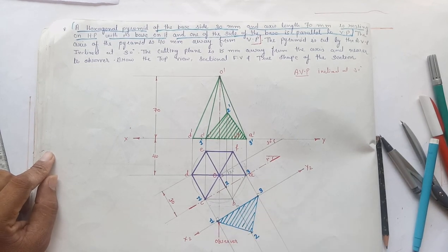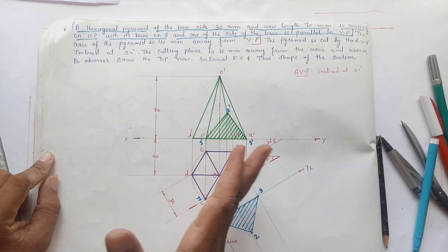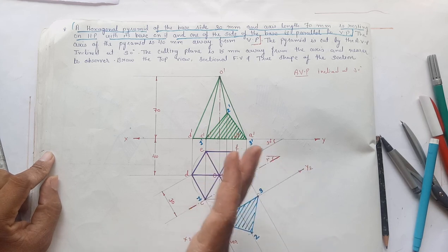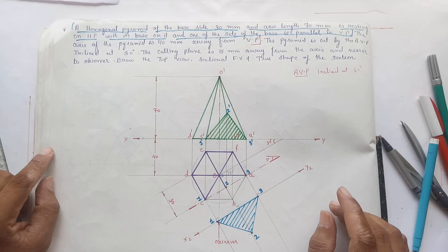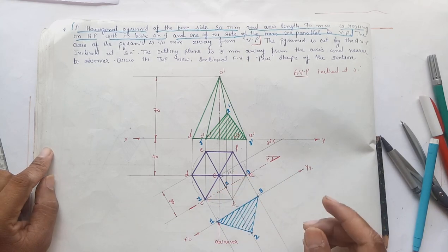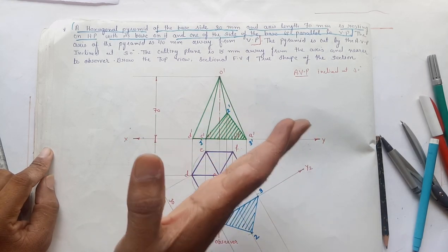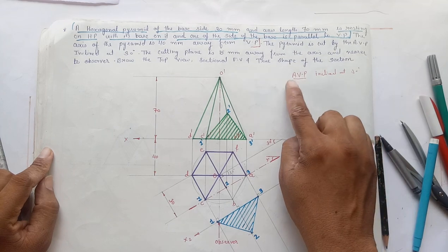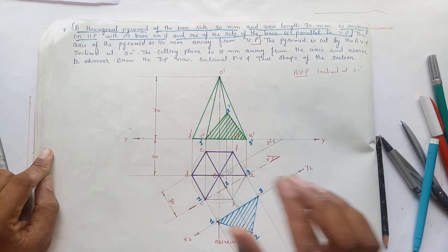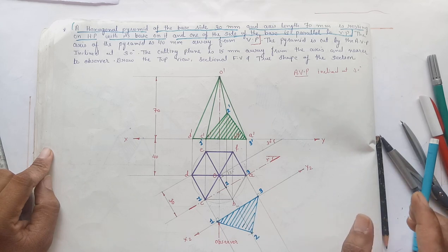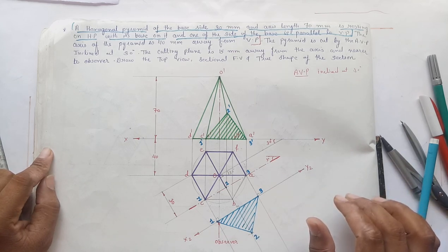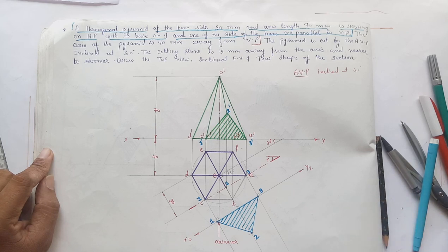This will be the true shape of the section. Draw hatching lines in the true shape also, inclined at an angle of 45 degrees to the X2Y2 line. In this example we showed the cutting plane in the plan because it was an AVP, while in the first example we showed it in the elevation because it was an AIP. This is it for today; we will practice more problems in the next lecture. Thank you.